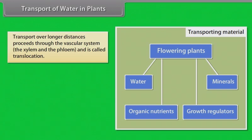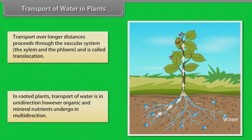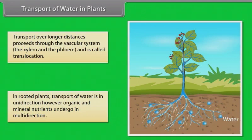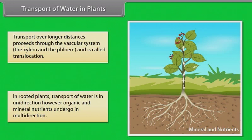In rooted plants, transport in xylem is essentially unidirectional, from roots to the stems. Organic and mineral nutrients, however, undergo multidirectional transport. Now we will learn about the means of transport for short distances in plants.